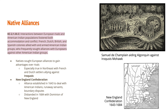French, Dutch, British, and Spanish colonies allied with and armed American Indian groups, who frequently sought alliances with Europeans against other American Indian groups. Though Native Americans were often on the losing end of European interactions — whether through direct violence or disease — they still held agency over their future and acted within their own best interest. Sometimes that meant allying with Europeans to beat traditional rivals, especially in the Northeast, where French and Dutch settlers allied with former enemies of the Iroquois Confederacy, which held dominance over what is now New York.